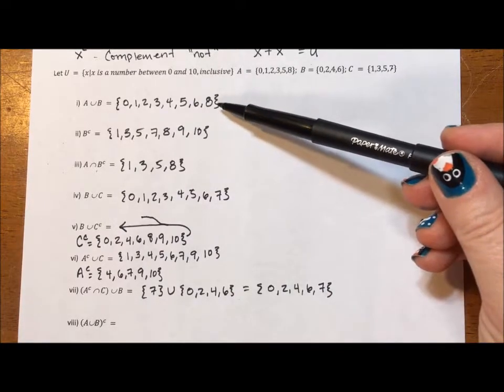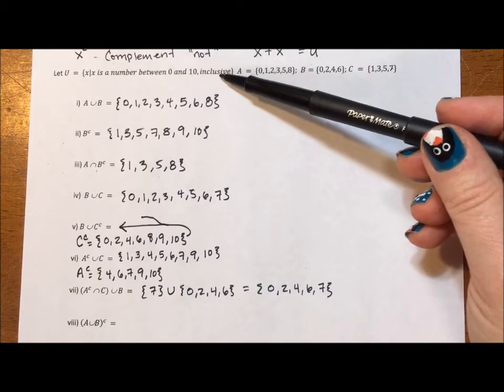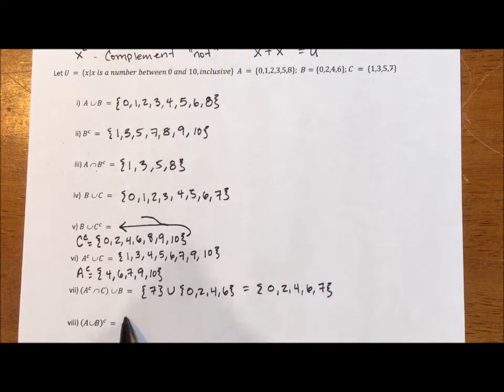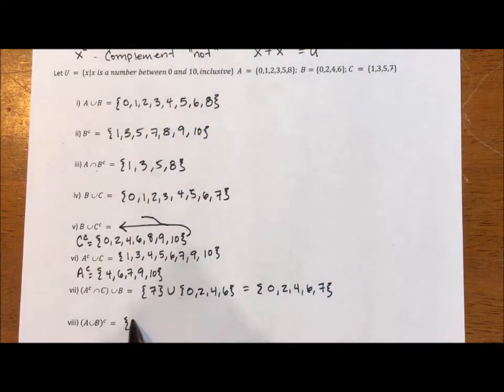A union B. We did A union B up here in the very first problem. So the complement of that is everything in the universe, not in the set. So 0, 1, 2, 3, 4, 5, 6, 7, 8, 9, and 10.